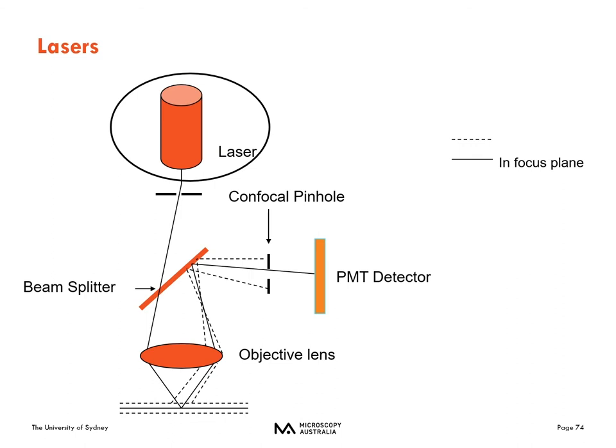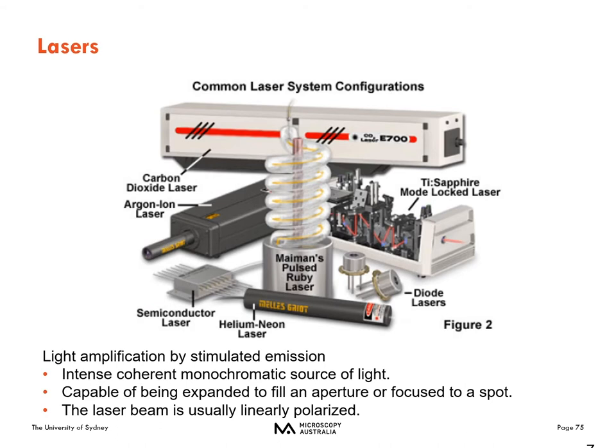The laser is the light source at the top of my schematic. There are many, many different lasers available. It's a very intense, coherent, monochromatic source of light. So instead of a white light source like we use in fluorescence microscopy or even brightfield microscopy, this is just going to be a single wavelength, typically. That coherent light source will be expanded to fill the back aperture, or it can be focused down to a very small point of light — and that's what we need for scanning.